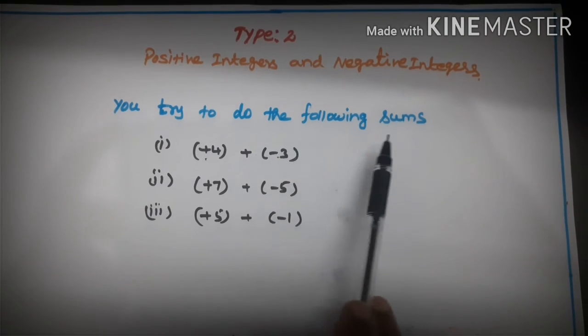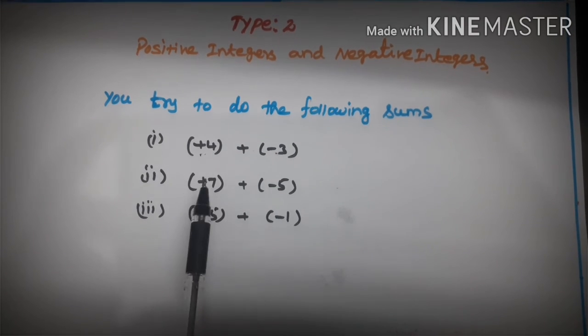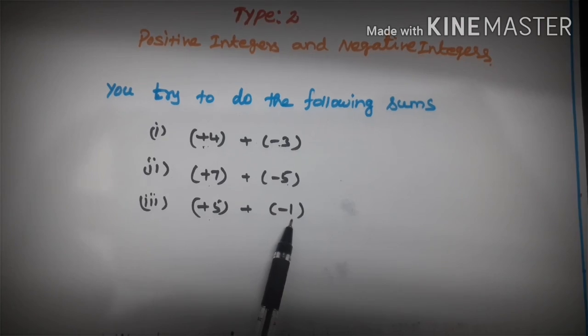Try to do the following sums: positive 4 and negative 3, positive 7 and negative 5, positive 5 and negative 1.